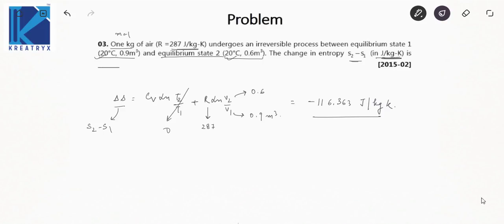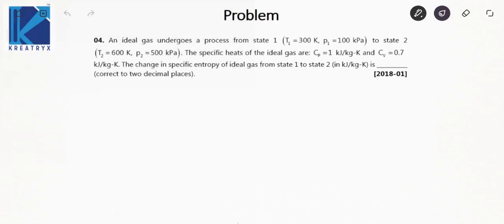Do remember the formulas. Next question: an ideal gas undergoes a process from state one to state two. Conditions are given for both states. Specific heats Cp and Cv in kilojoule per kilogram Kelvin are given. You have to find the change in specific entropy in kilojoule per kilogram Kelvin from state one to state two.